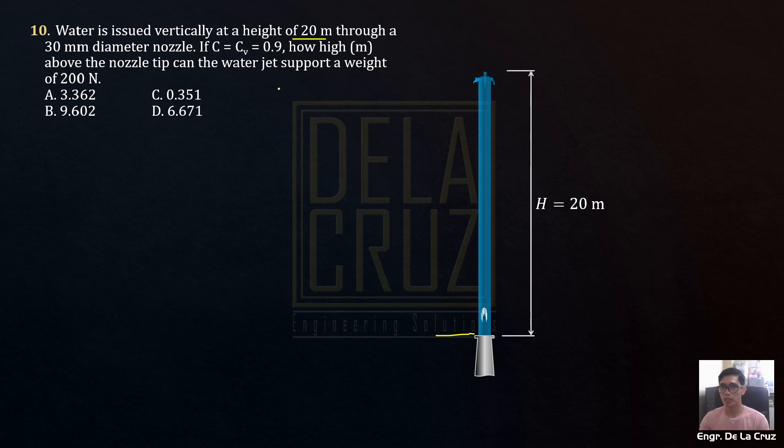Can the water jet support the weight of 200 N? So with the same speed, the same force, or the same speed of water, the same nozzle tip, and we have here, let's say a flat bar, 200 N, theoretically.